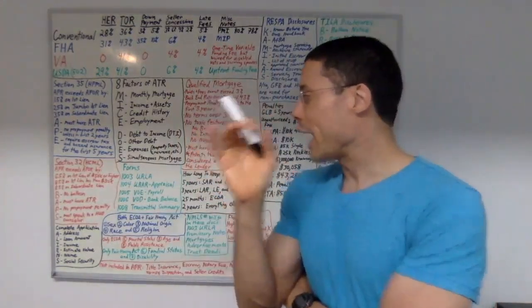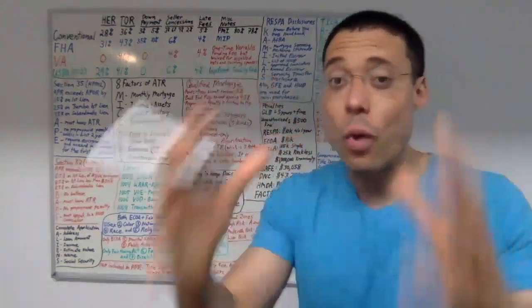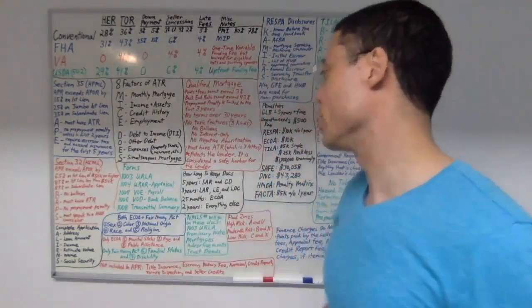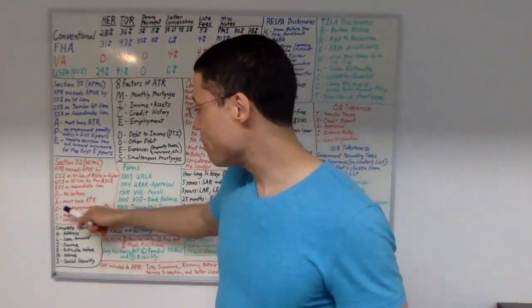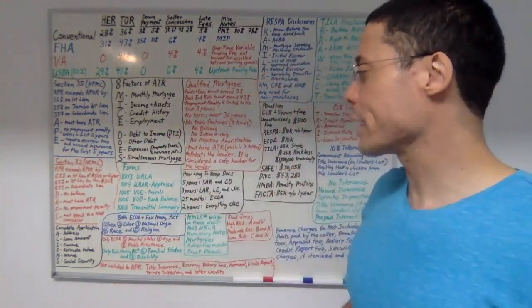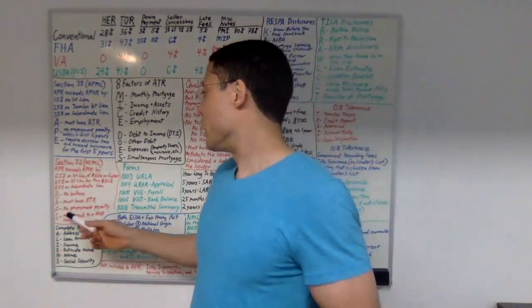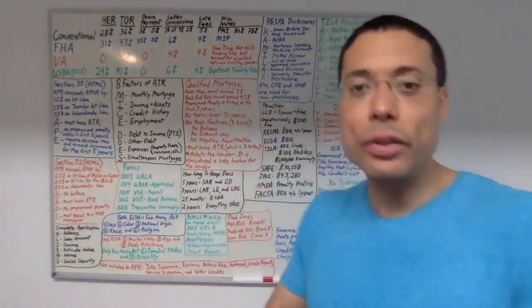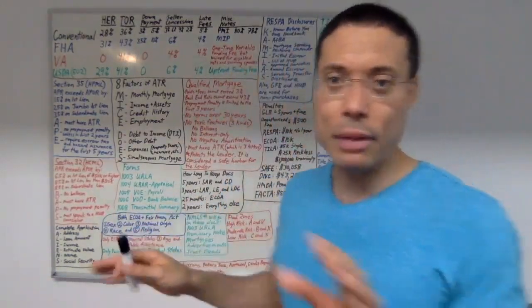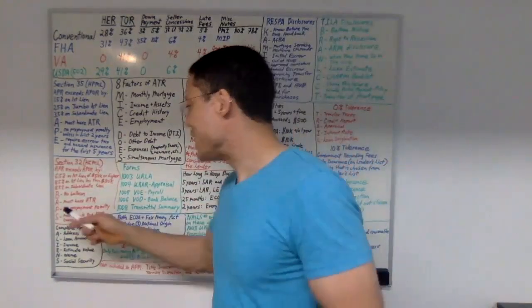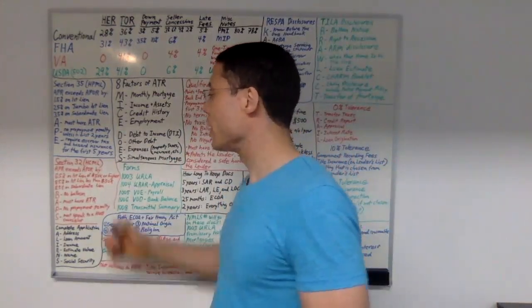For high-cost mortgage loans, think of the acronym PAPS: B stands for no balloon payment. A stands for ATR — must have ability to repay. P stands for no prepayment penalty. And S stands for must speak to a HUD counselor. So a Section 32 high-cost mortgage loan must have PAPS.